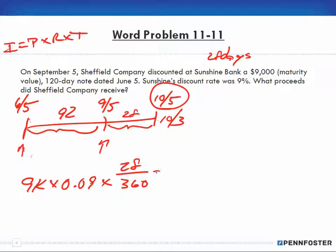And now we can do the calculations. Remember, interest is equal to principal times rate times time. So we have $9,000 times our rate was 9%, 0.09, times our 28 days over 360. Do the math. $9,000 times 0.09 times 28 gives me 22,680, and that's divided by 360.